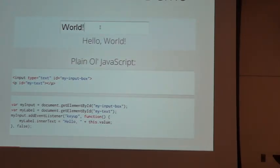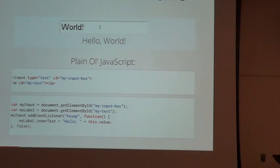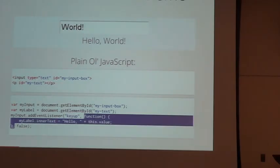This approach is okay — you can use jQuery to reduce the lines of code a bit, but it's basically the same thing. We have a lot of code where we're looking for elements and manually updating the web page. It gets really hairy as soon as we start adding Ajax requests and updating multiple parts of the page. You can get into spaghetti code or callback hell — callbacks calling other callbacks — and things can collapse under their own weight pretty quickly.